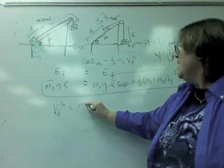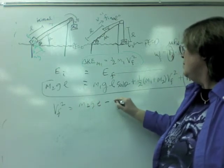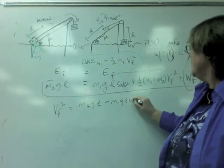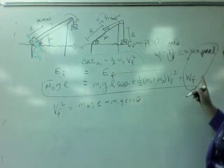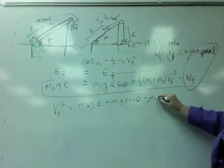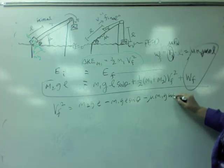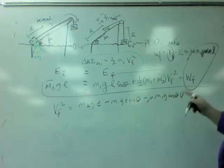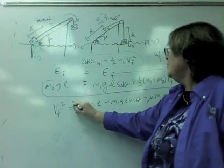Now, V squared, then, is going to be M2gL minus M1gL sine theta minus mu M1g cosine theta L. And, we're going to multiply both sides by two.